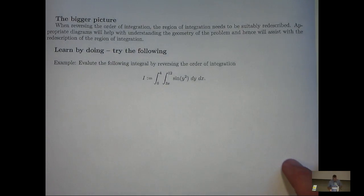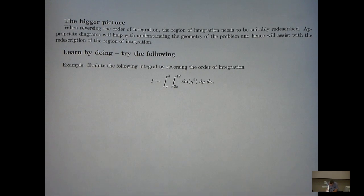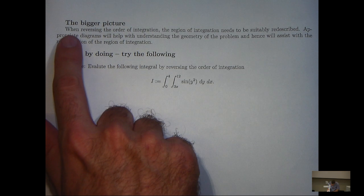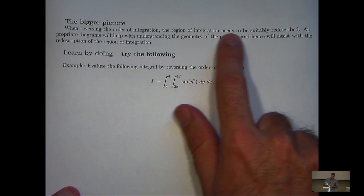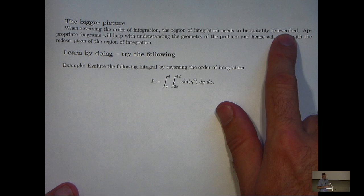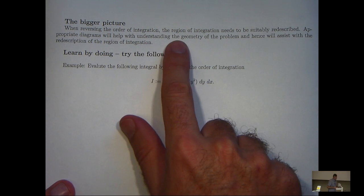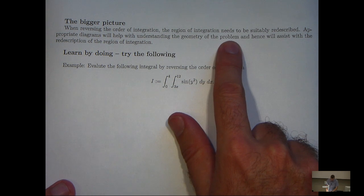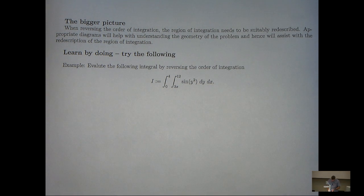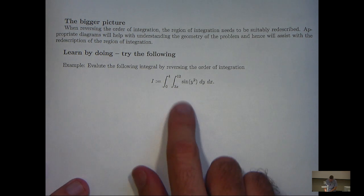So, let's look at the bigger picture now. And this basically has to do with method. When reversing the order of integration, the region of integration needs to be suitably mathematically re-described. And appropriate diagrams will help with the understanding of the geometry of the problem, and hence it will assist with the re-description of the region of integration. So, in other words, always draw a picture.